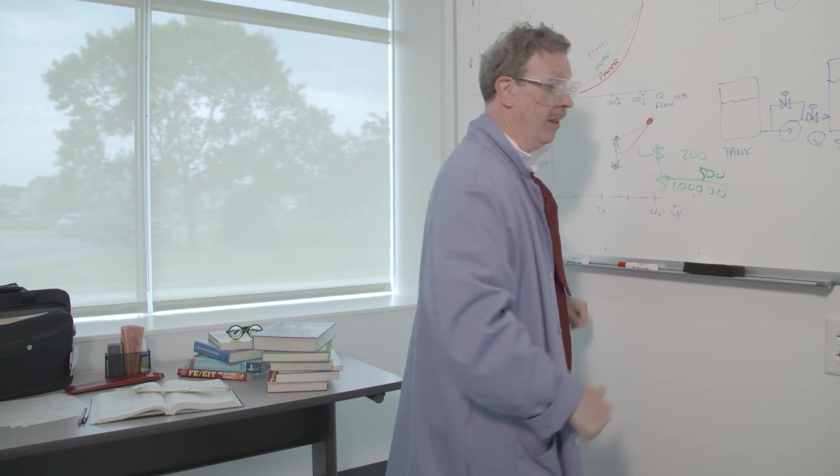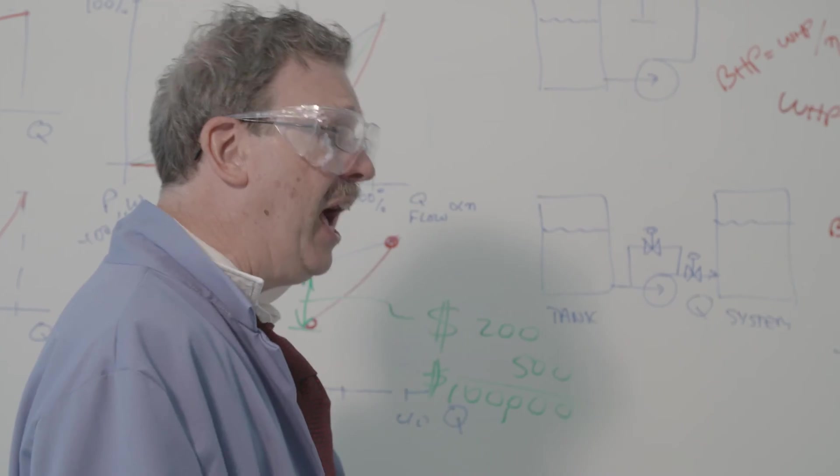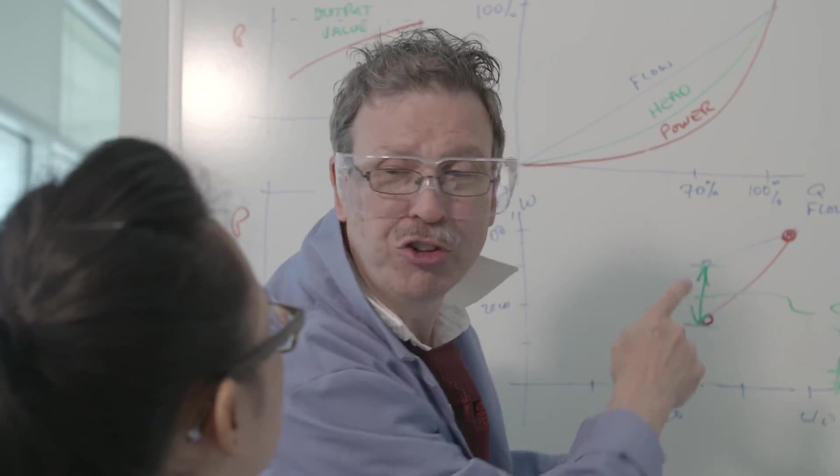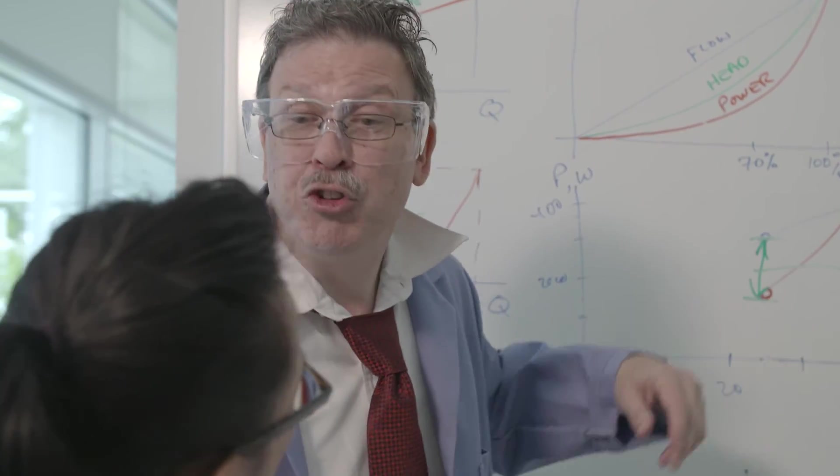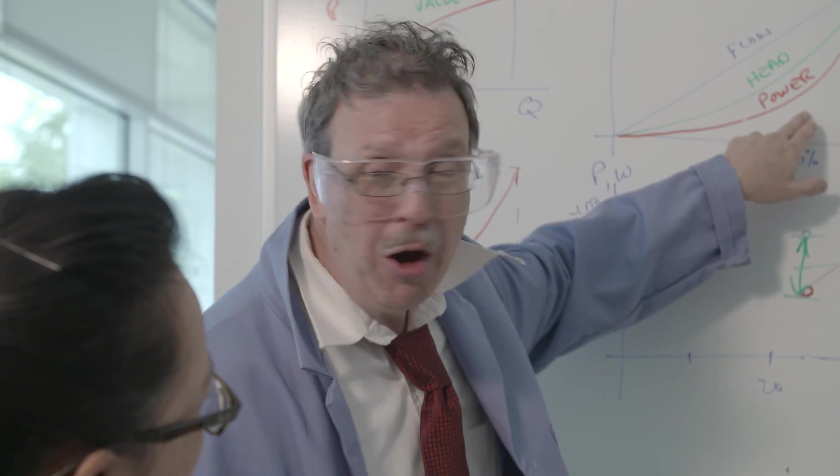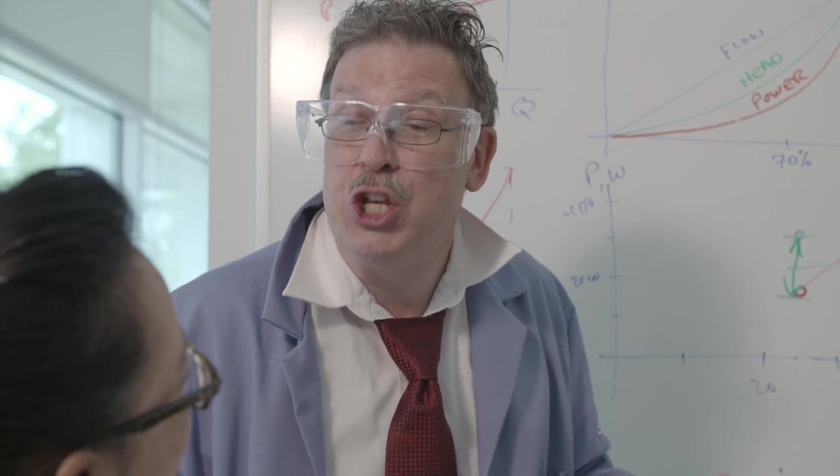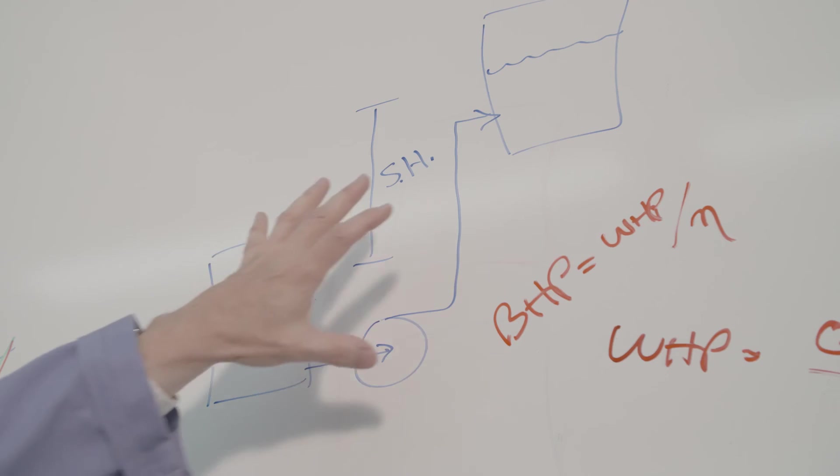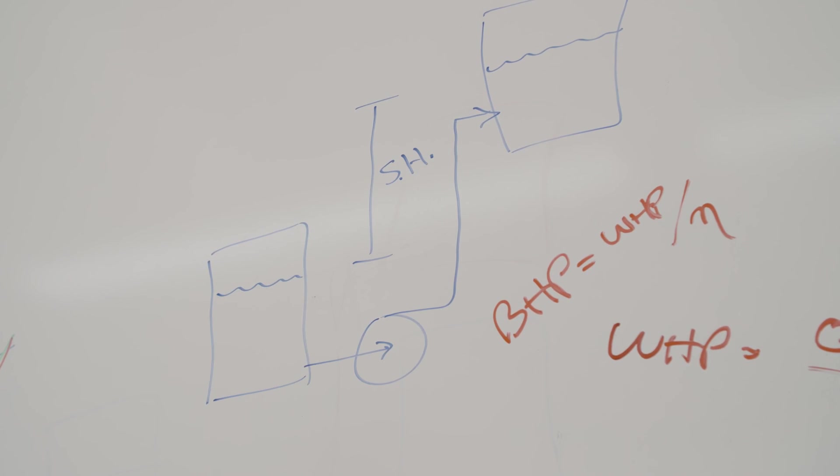Yeah, it sure is. But is that all there is to these affinity laws? Yeah, that's pretty much it. It's really quite simple. Again, flow is proportional to speed. The head is proportional to speed squared. But the power which we pay for is proportional to speed cubed. But you know what? You don't get quite as much savings if you have a system like this where you have a fairly high static head.